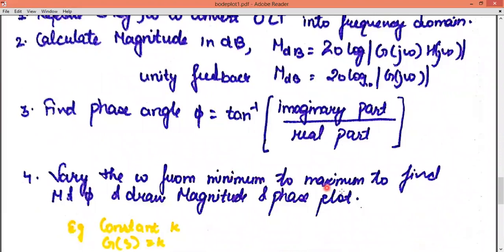The fourth step is: vary the ω from minimum to maximum to find the magnitude and phase, and draw the magnitude and phase plot. You have to vary the frequency from minimum to maximum and draw the magnitude and phase plot. We will focus more on magnitude.